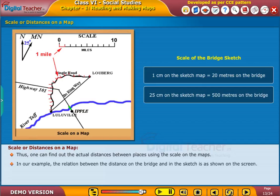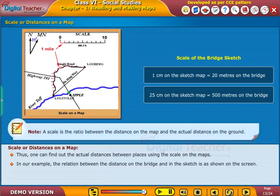In our example, the relation between the distance on the bridge and in the sketch is as shown on the screen. Note, a scale is the ratio between the distance on the map and the actual distance on the ground.